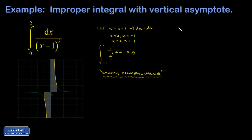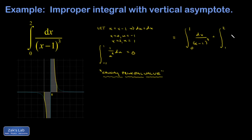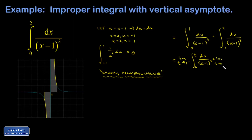Now let's look at the more traditional approach in introductory calculus. Since x equals 1 is the problematic point, I need to break my integration interval there. I rephrase around the singularity using limits: the limit as t goes to 1 from the left of the integral from 0 to t of dx over (x minus 1) cubed, plus the limit as t goes to 1 from the right of the integral from t to 2 of dx over (x minus 1) cubed.